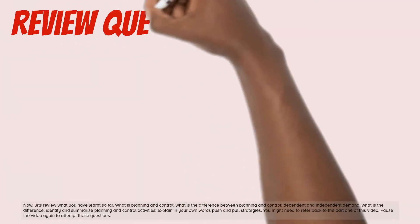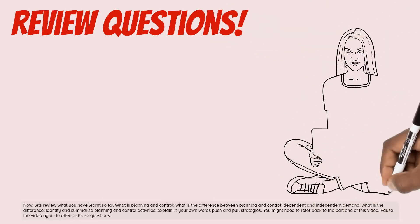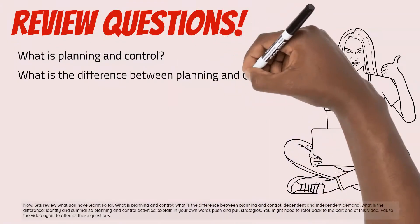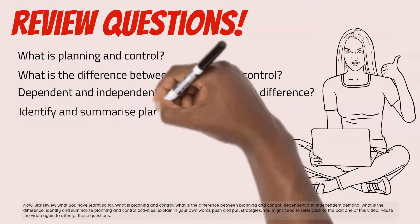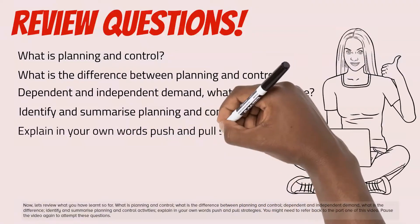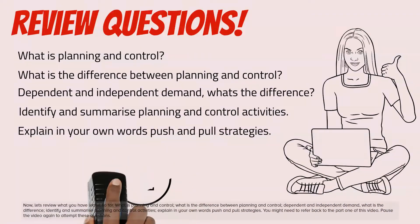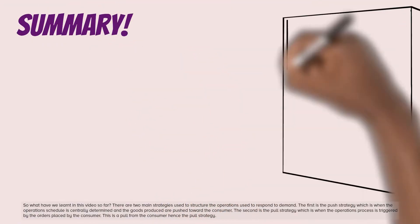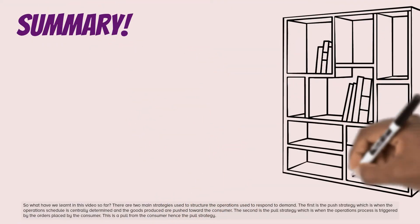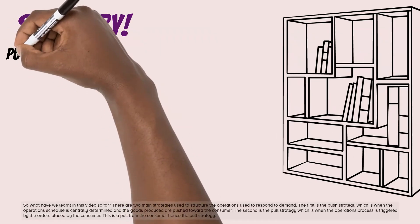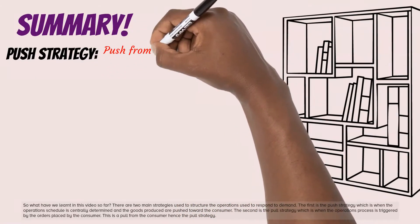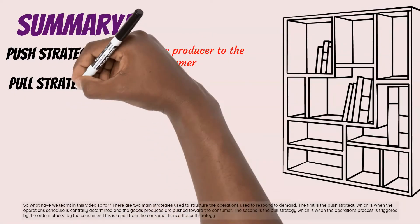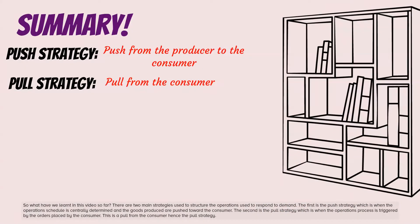Let's review what you have learned so far. There are two main strategies used to structure the operations used to respond to demand. The first is the push strategy, which is when the operation schedule is centrally determined and the goods produced are pushed toward the consumer. The second is the pull strategy, which is when the operations process is triggered by the orders placed by the consumer — a pull from the consumer, hence the pull strategy.